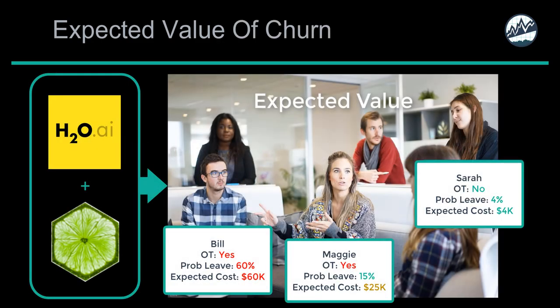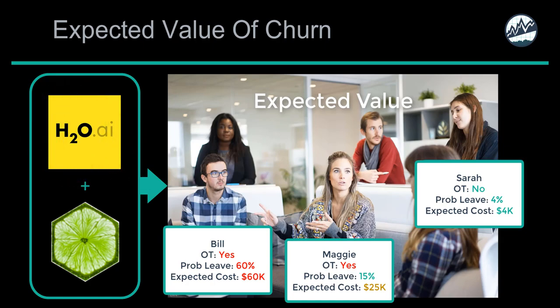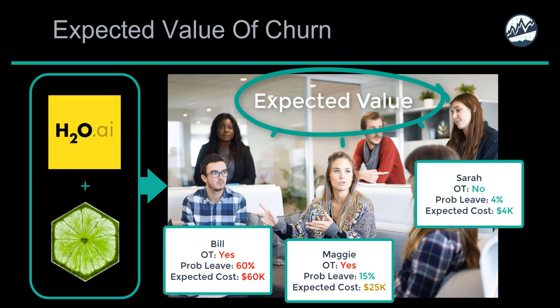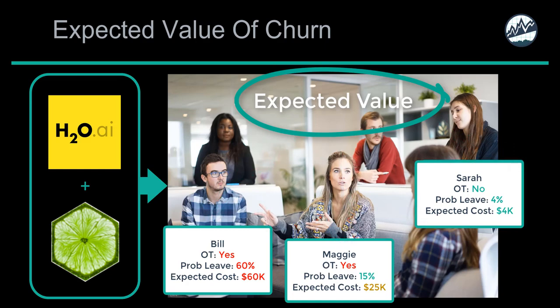Let's apply this knowledge of expected value to our employee churn problem. Suppose we use our H2O model to generate predictions on new data. The class predictions for the probability of leaving are produced. We then run LIME and see that overtime is consistently a top feature supporting churn. Putting two and two together, we develop a theory that a no-overtime policy can help reduce churn costs, and we use expected value to generate expected churn costs showing the organization ROI.